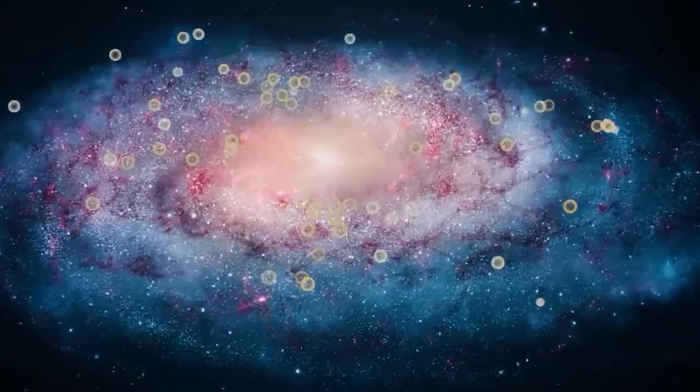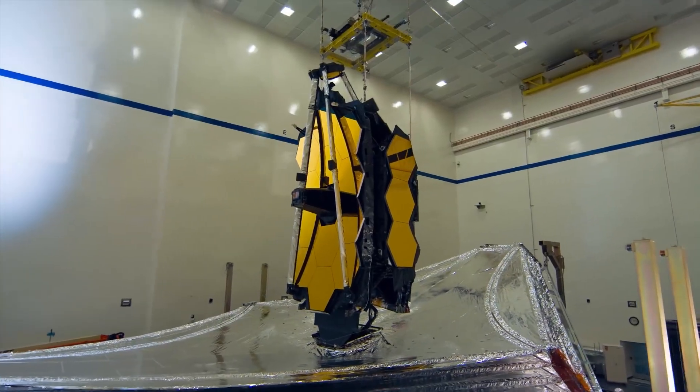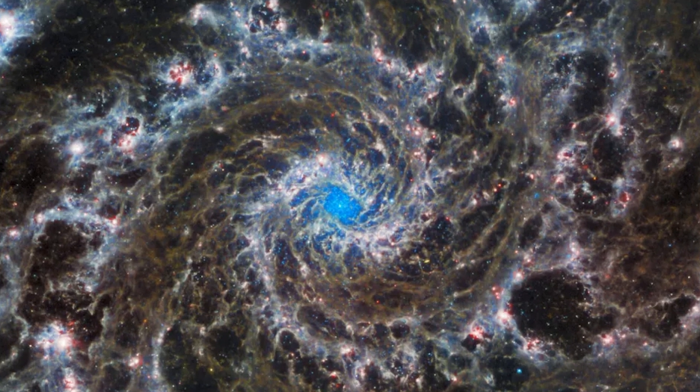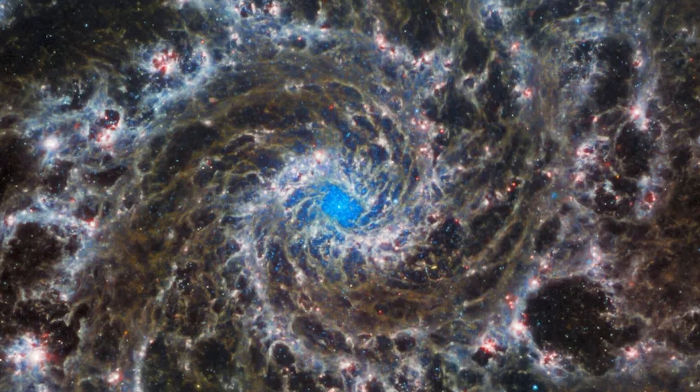In addition to the Tarantula Nebula, the JWST has also captured a stunning new image of a spiral galaxy known as M74, or the Phantom Galaxy.